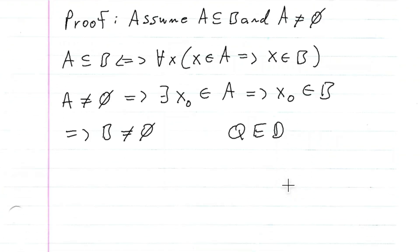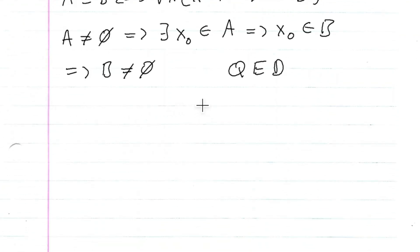And this is clearly seen through a diagram. If we have B, and we have A, if A is non-empty, that means A has this X_0. And if this X_0 is in A, then of course X_0 is in B.